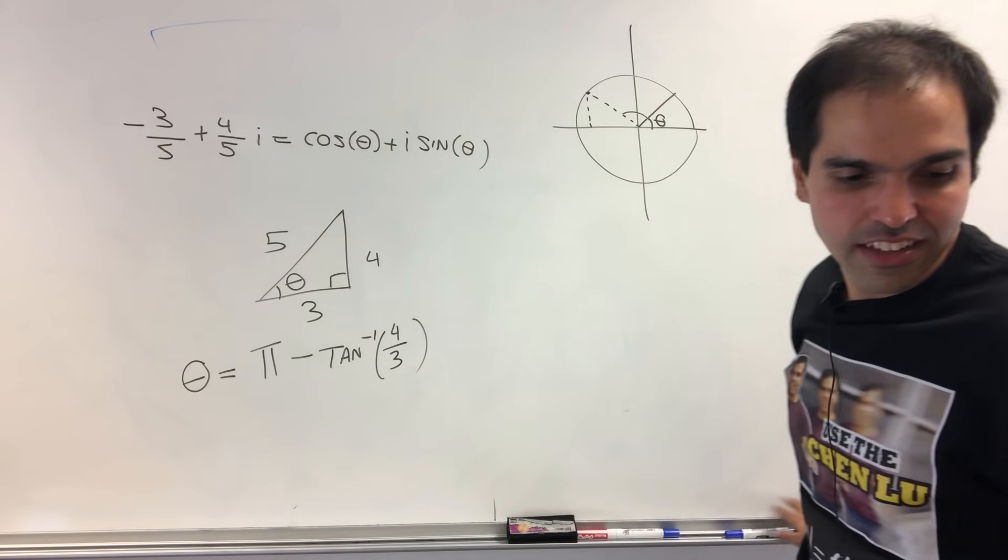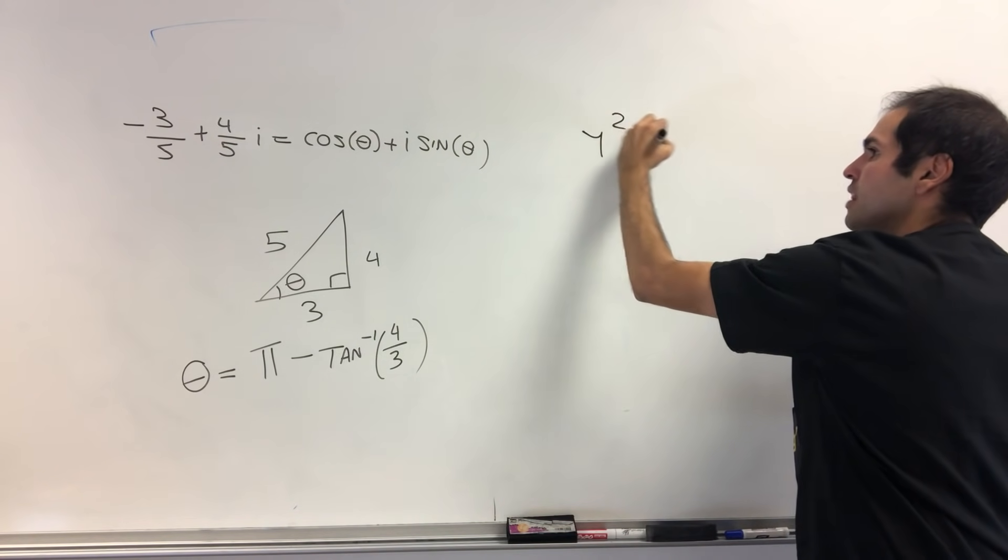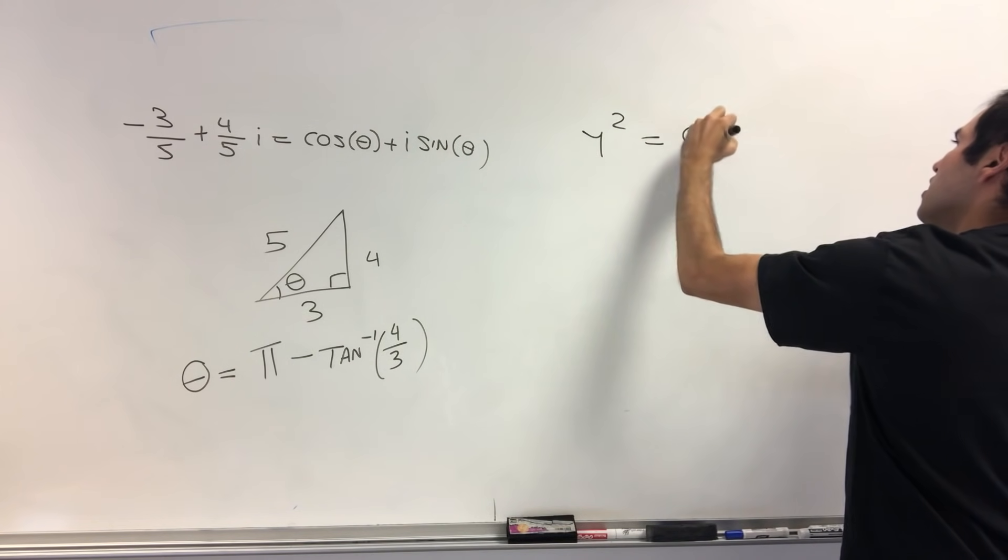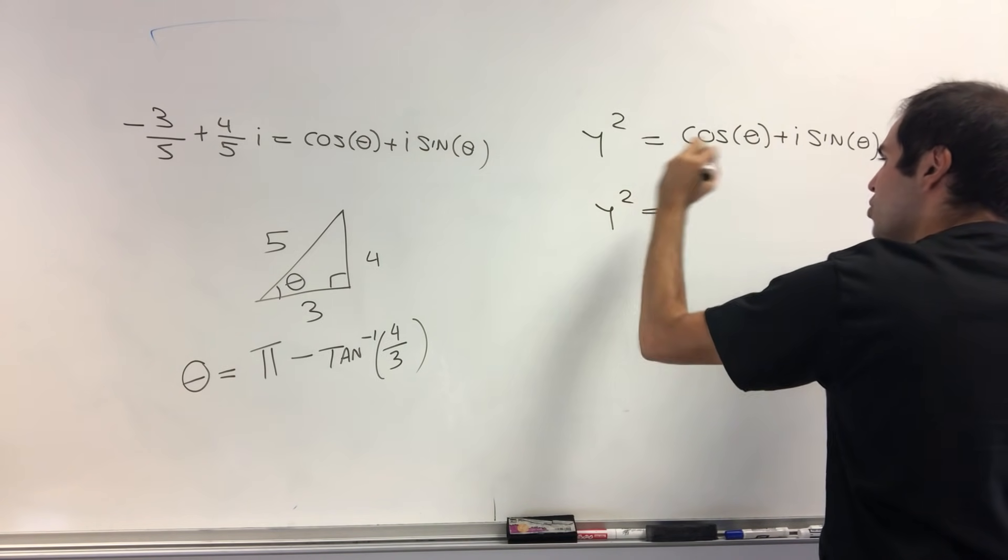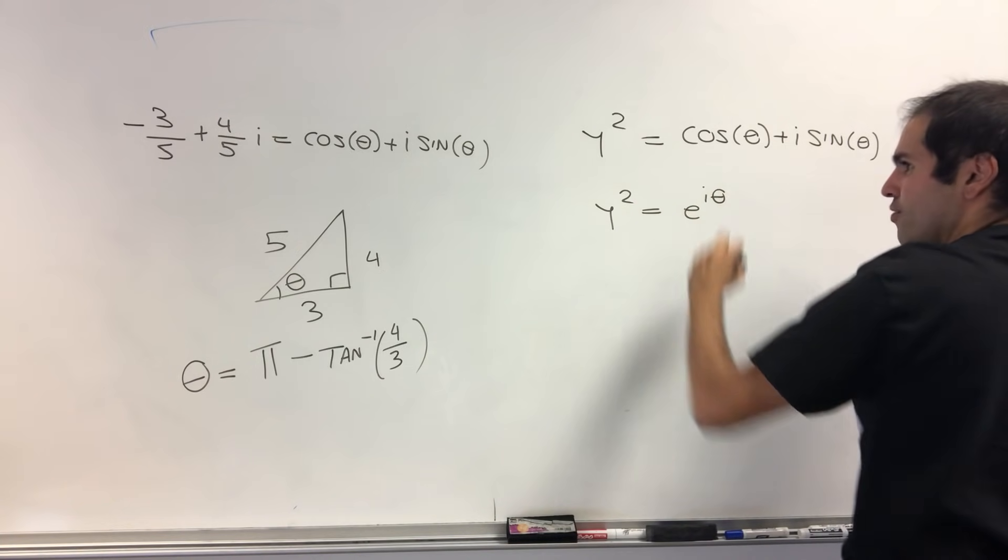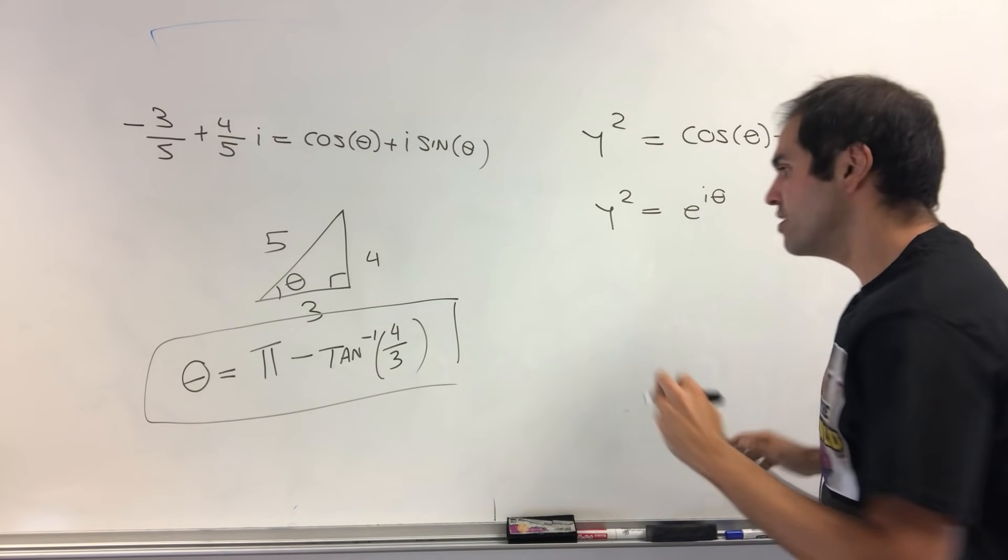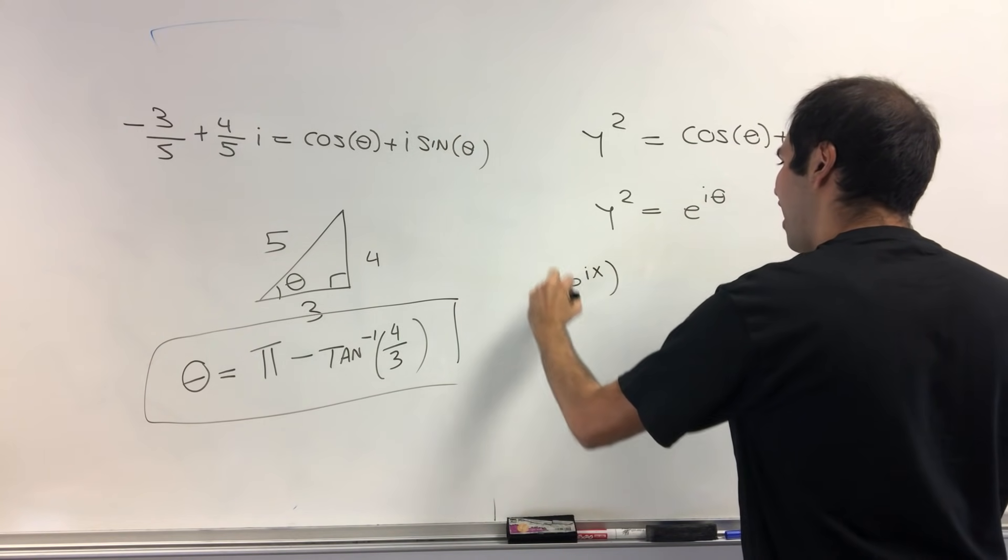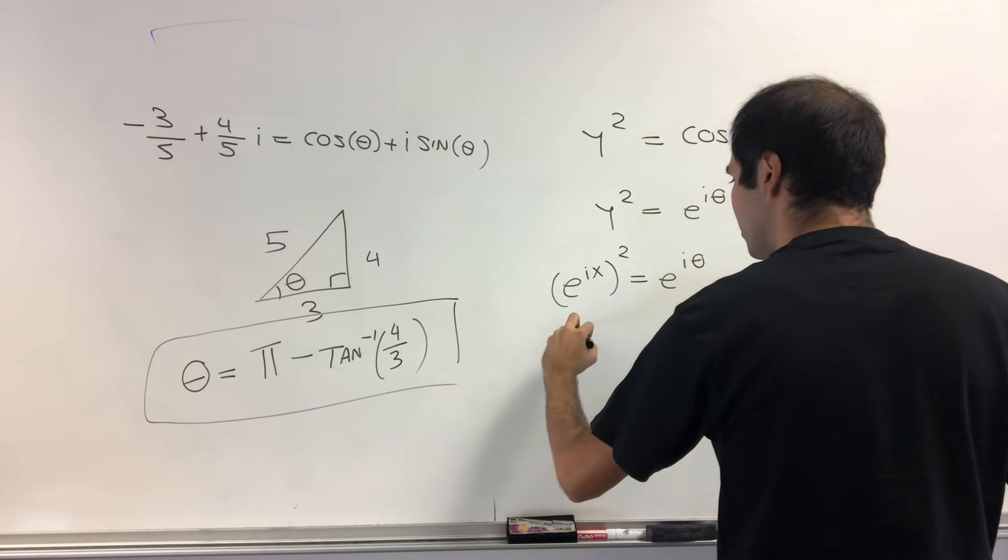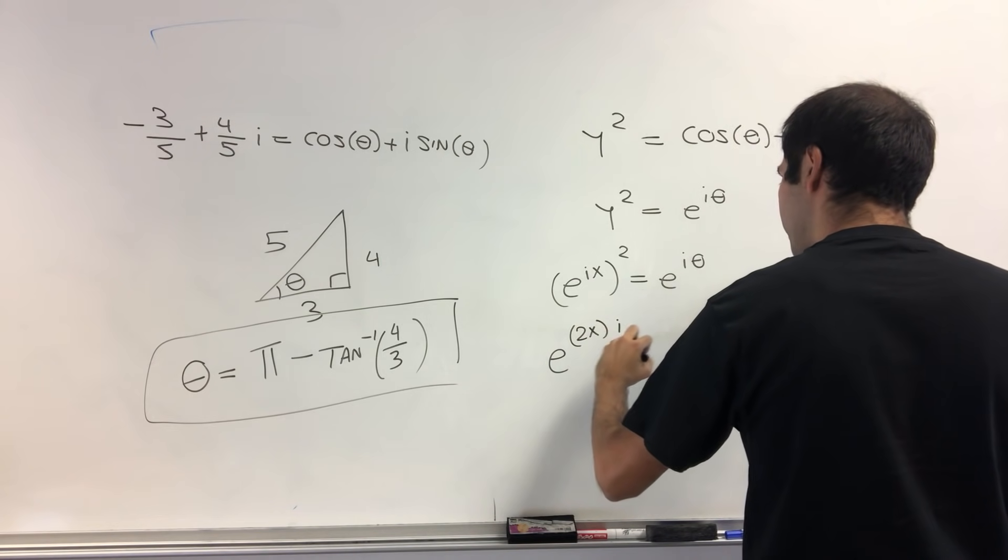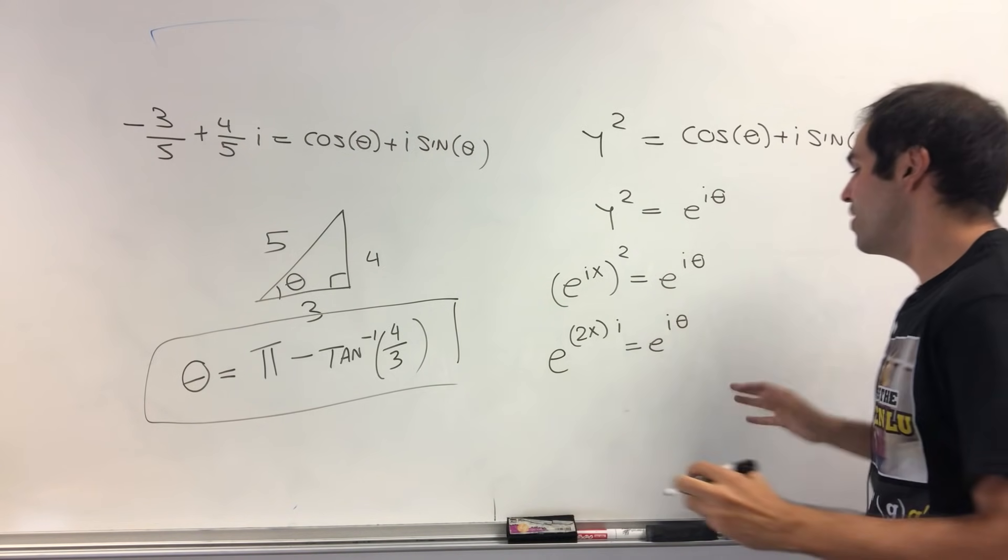And so we do have this expression. And what's nice about this is then we get that y squared then does become cosine of theta plus i sine of theta, which then becomes y squared equals e to the i theta. For, again, this specific value of theta. All right. But remember what was y. Y was e to the ix. So e to the ix squared equals e to the i theta. And then e to the 2xi equals e to the i theta.